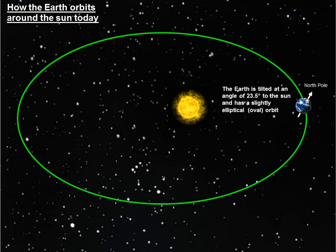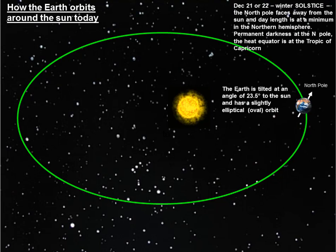Don't forget, 23.5 degrees is also the latitude of both tropics. On December the 21st or 22nd, it's the winter solstice — the North Pole faces away from the Sun and day length is at a minimum in the Northern Hemisphere. You get permanent darkness at the North Pole, and the heat equator is actually over the Tropic of Capricorn.